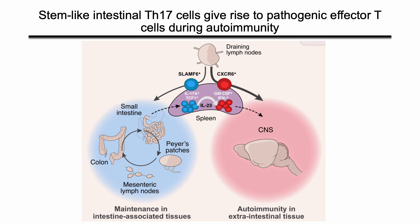In summary, we used combined single-cell RNA and TCR sequencing to identify two populations in the spleen upon EAE. The pathogenic population can migrate to the CNS and contribute to the autoimmunity there, while the non-pathogenic population circulates within the intestinal-associated tissues to maintain homeostasis. Also, the non-pathogenic population could give rise to the pathogenic population and replenish them during EAE.